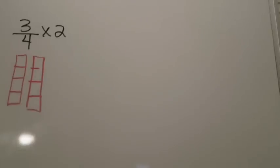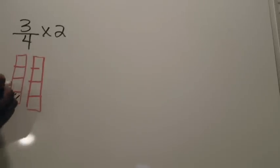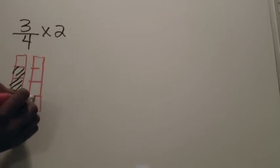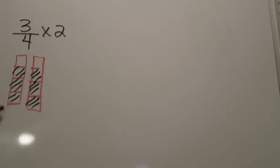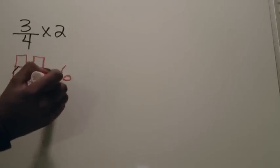Now I look at my numerator, which says that in each of the two wholes divided into four equal parts, I'm going to shade in three fourths of each. So I shade one, two, three sections in the first whole, and one, two, three in the second. Now I interpret my model: these are divided into fourths, and I count how many fourth pieces I shaded — one, two, three, four, five, six. So 3/4 times 2 equals 6/4.